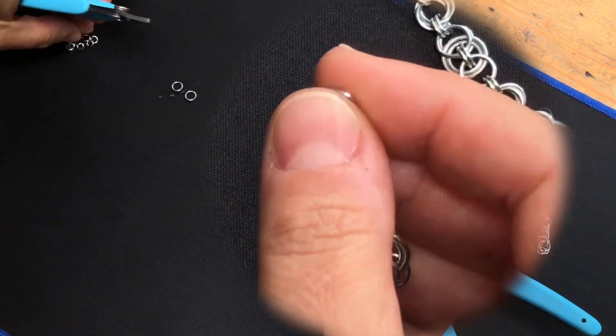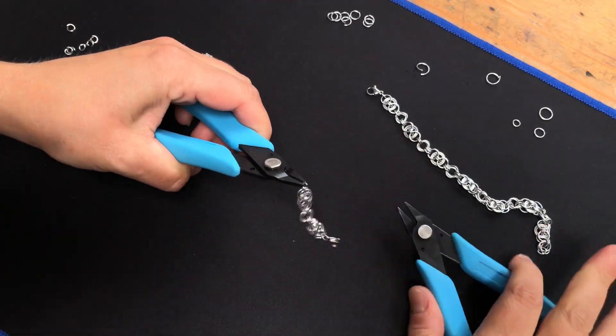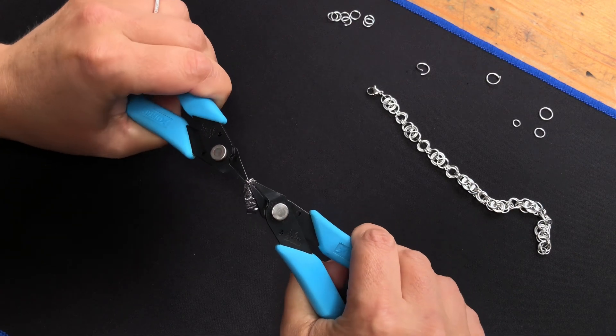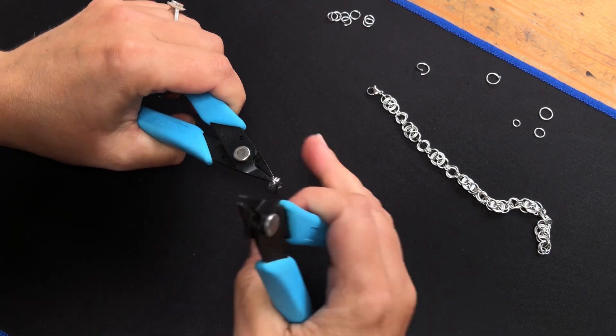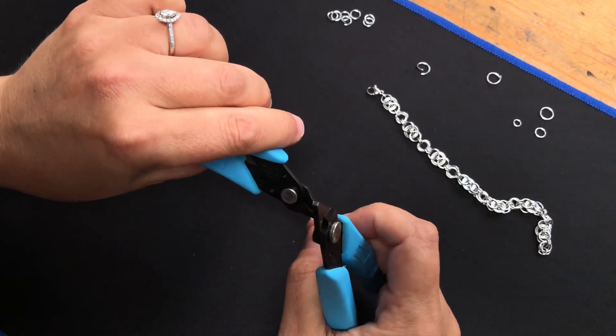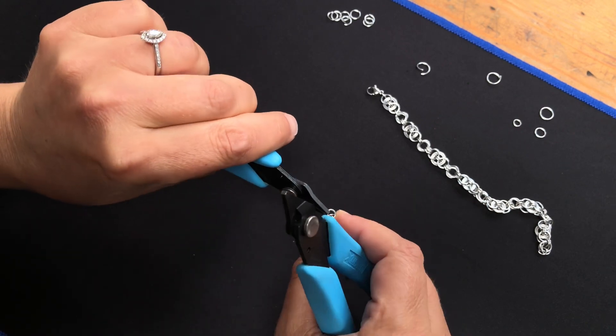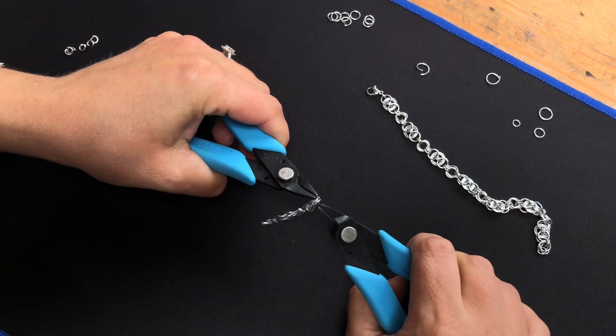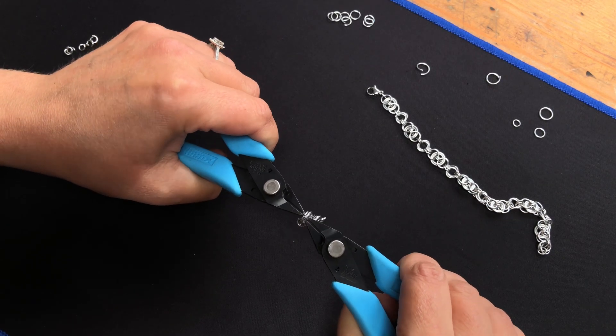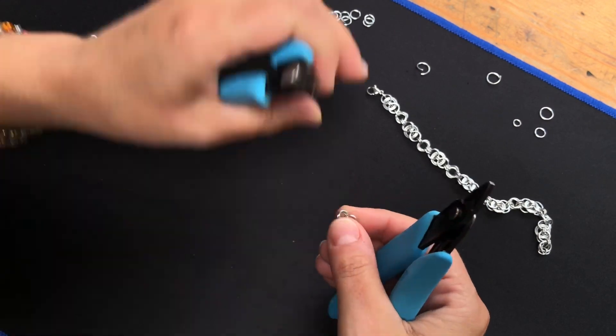So I'll do one more mobius to show you. Two small rings now in those mediums.